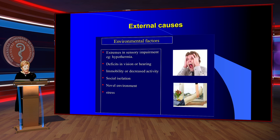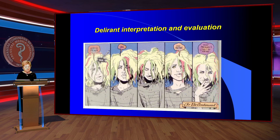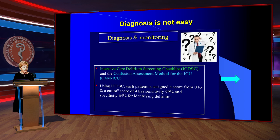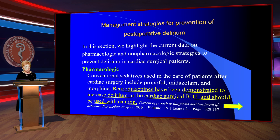External causes of delirium include social isolation, stress, and deficit in vision or hearing. Delirium diagnosis is not easy. Diagnosis and monitoring tools include the Intensive Care Delirium Screening Checklist and the Confusion Assessment Method for the ICU (CAM-ICU). Management strategy for prevention of post-operative delirium is important.